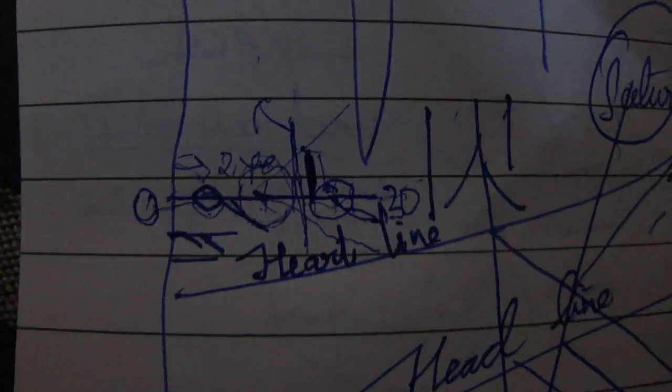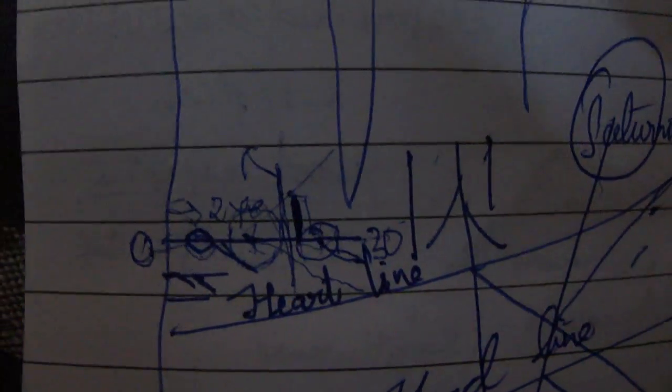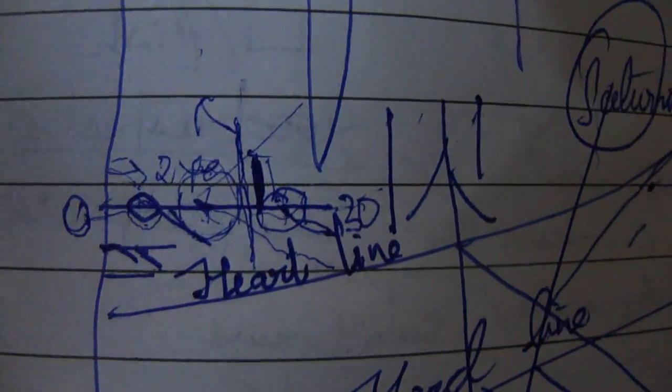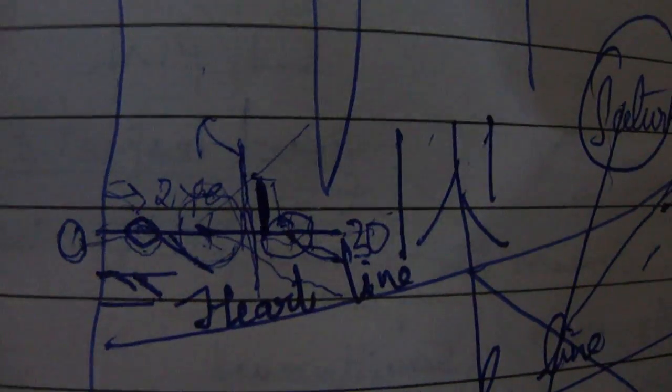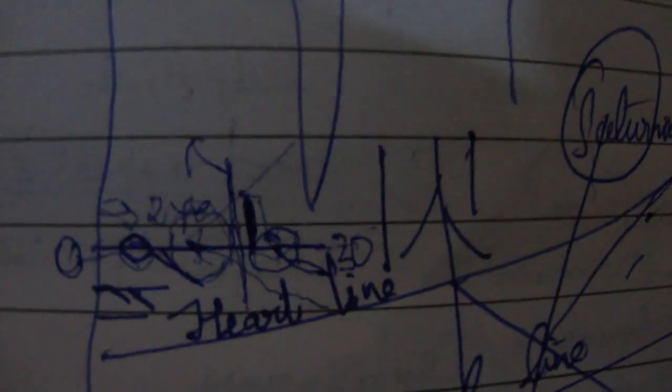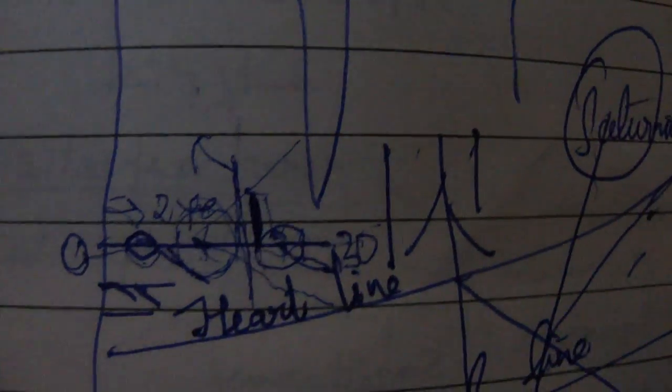An important point is that child lines are not very accurate and should ideally be seen on a woman's palm. They are accurate in the sense that a thin line indicates a female child and a thick line indicates a male child. However, if no lines are present, it does not mean the person will not have children. Only the presence of lines at times indicates what kind of child is likely.